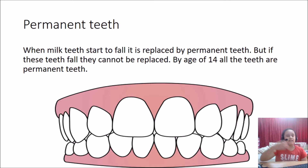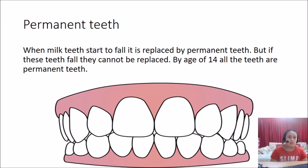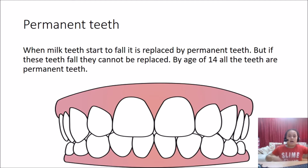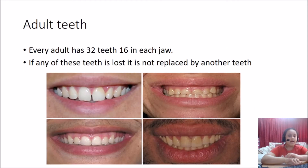Let's now talk about permanent teeth. When the milk teeth start to fall, they are replaced by permanent teeth. But if this group of teeth fall, they cannot be replaced at all. By age 14, all the teeth are permanent. Every adult has 32 teeth — 16 in the lower jaw and 16 in the upper jaw. If any of these teeth is lost, it is not replaced by another tooth.